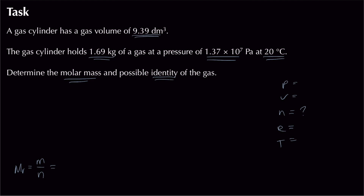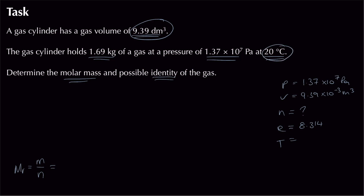Setting up PVNRT: pressure = 1.37 × 10⁷ Pa (already in pascals). Volume = 9.39 dm³, convert to 9.39 × 10⁻³ m³. R = 8.314 J K⁻¹ mol⁻¹. Temperature is 20°C — add 273 to get 293 K.